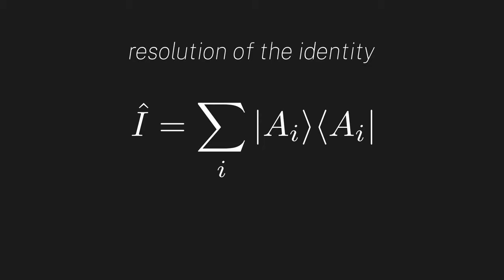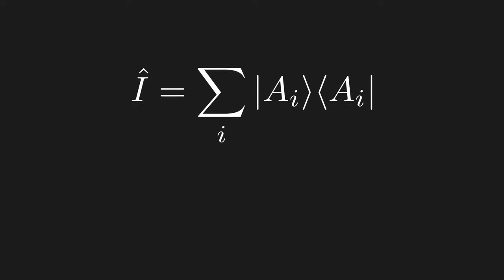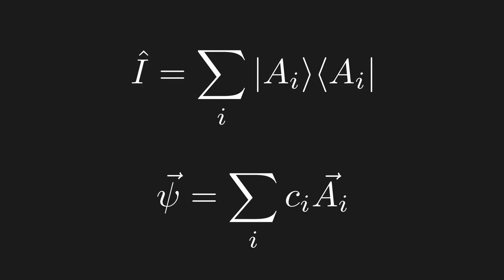More importantly, note how bra-ket notation made it really easy to move things around. If you run through this derivation in traditional vector notation, you'll very quickly see how clumsy and unintuitive it feels.